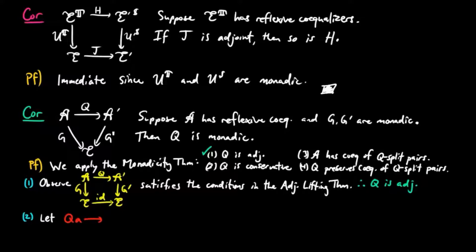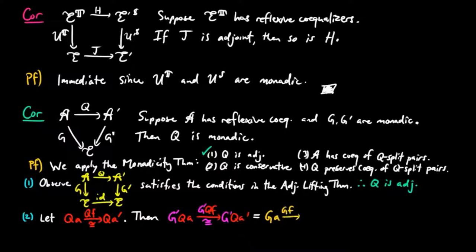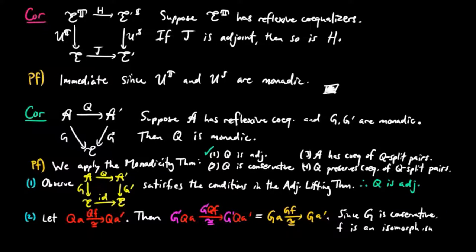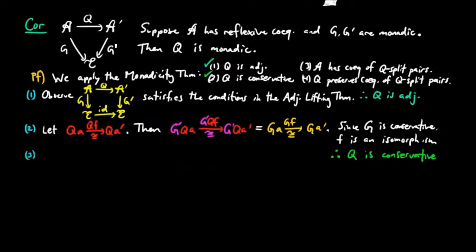For two, let QF be an isomorphism in the category A prime. Then G prime QF is an isomorphism, since functors preserve isomorphisms. But G prime Q is equal to G. Then since G is conservative, F must be an isomorphism. Therefore, Q is also conservative.